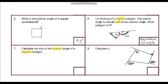Question seven: calculate the size of the exterior angle of a regular decagon. The sum of exterior angles of any polygon is 360 degrees. A regular decagon has 10 sides, so all angles are equal. We do 360 divided by 10, which gives us 36 degrees. That is our answer.